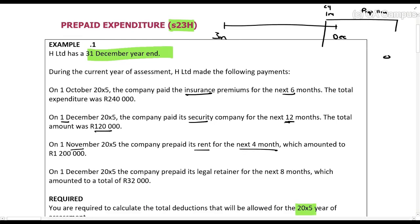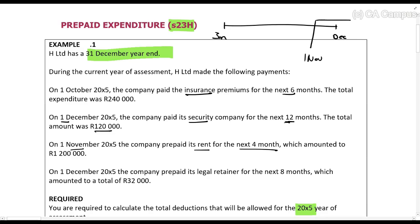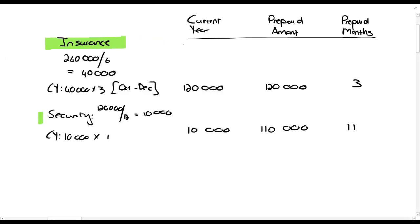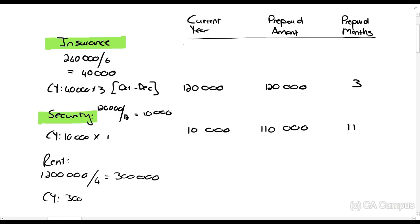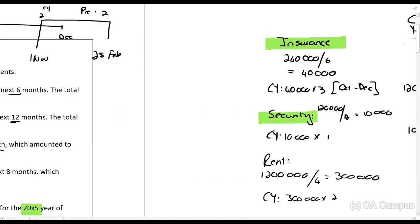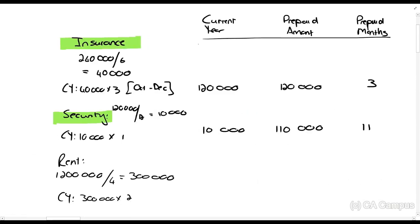They also prepaid the rent for the next four months on 1 November. So November, December, January, February — until end of February. That's two months in the current year and two months prepaid. The total is R1.2 million for four months, so R300,000 per month. Current year: R300,000 times two = R600,000. Prepaid: also two months = R600,000.